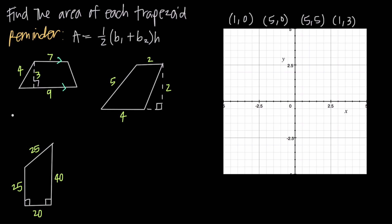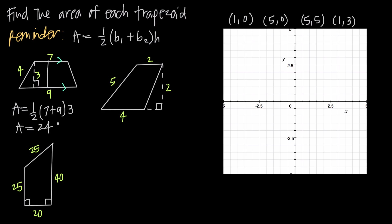In this first example, area equals one-half times the sum of the lengths of the bases. The two parallel sides have lengths seven and nine, so we write seven plus nine. Then we multiply by the height — the distance between the two bases. Note this is not the slant height; the slant height of four is irrelevant. The actual height, the distance directly between the two parallel sides, is three. So: one-half times sixteen times three equals eight times three, giving an area of 24 square units.